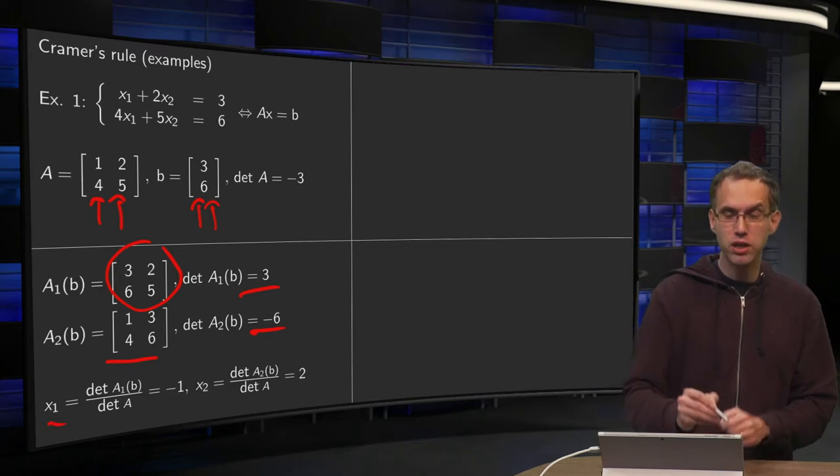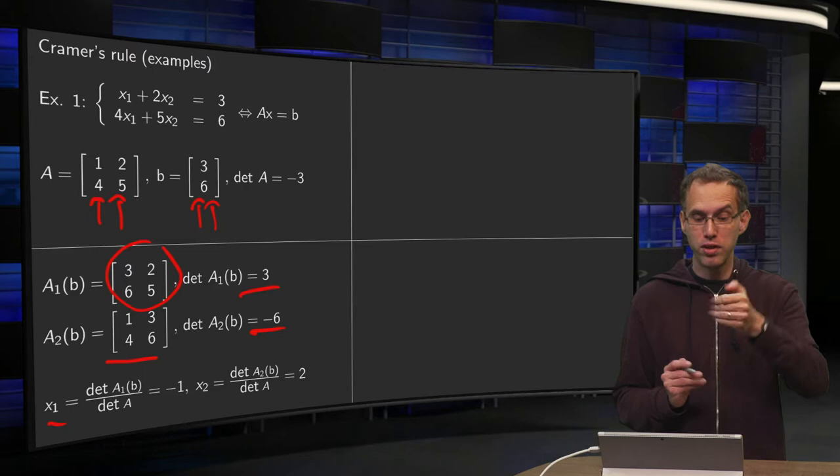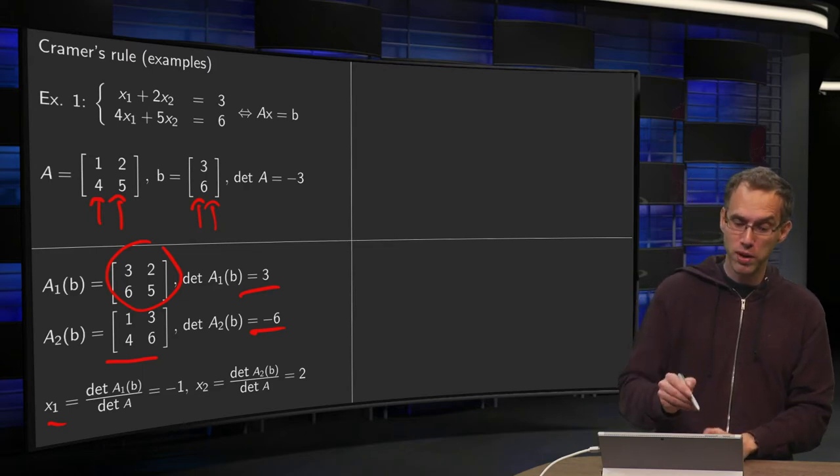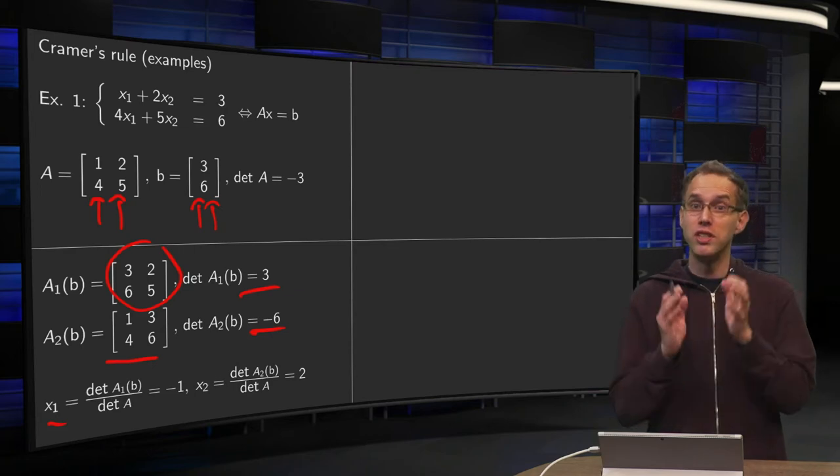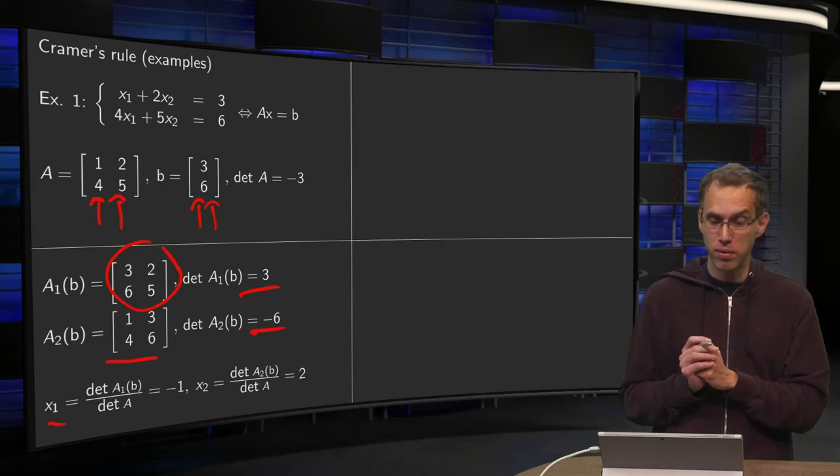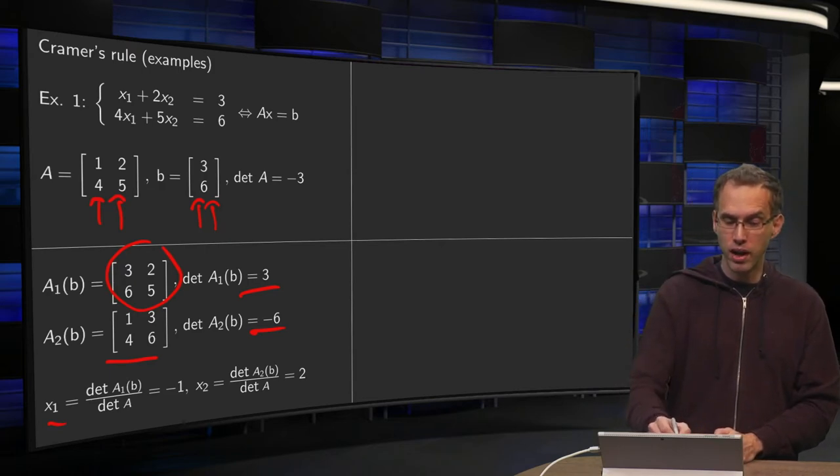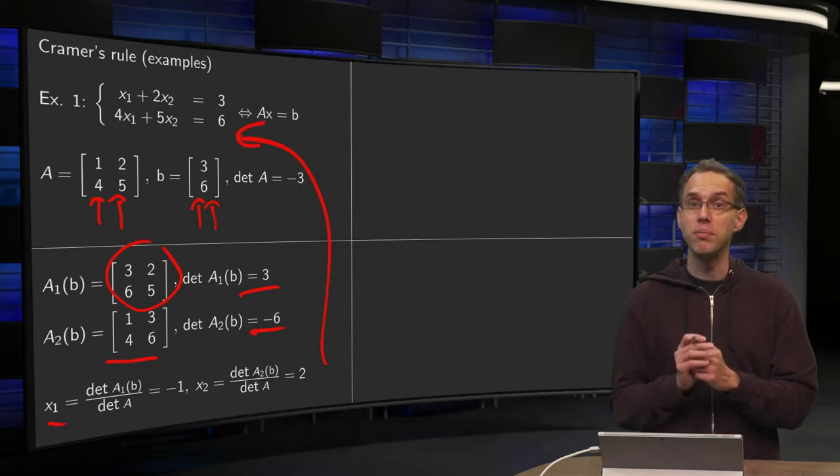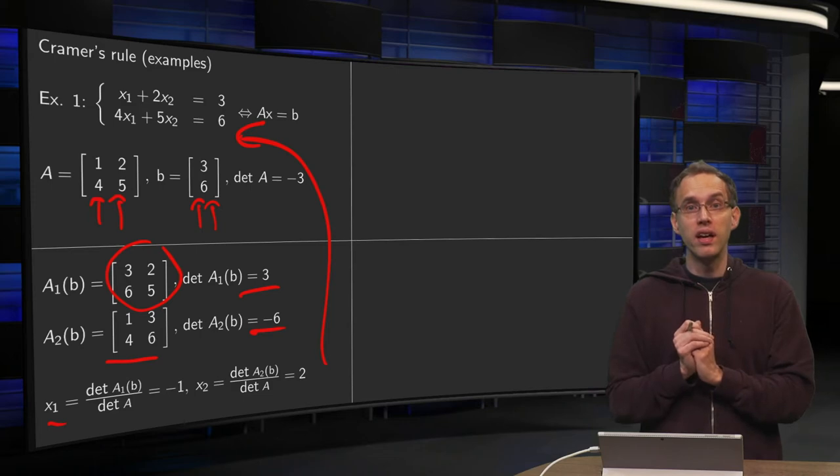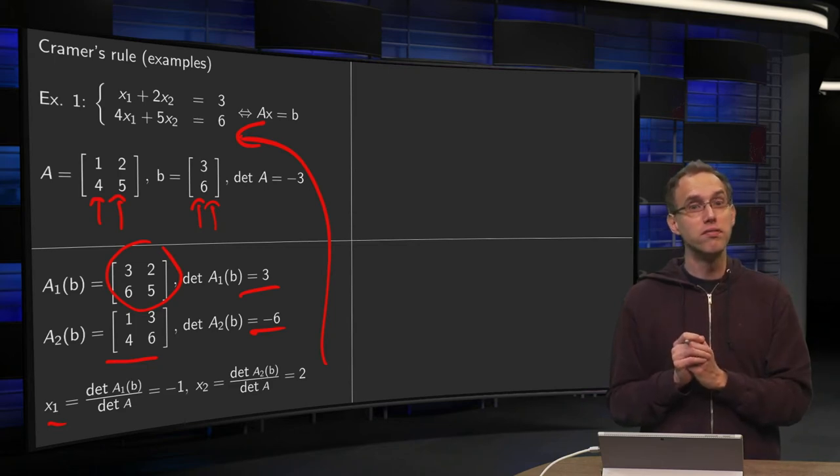And then x1 is just determinant A1(b) over the determinant of A. So 3 divided by minus 3 equals minus 1. And x2 is just determinant A2(b) divided by determinant of A, or minus 6 over minus 3 equals 2. You can check by plugging those numbers into your original system. So you see it works, Cramer's rule works really fast here. Well, row reduction would be fast as well.